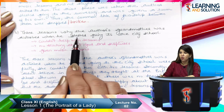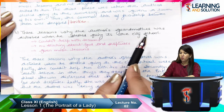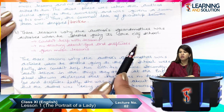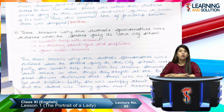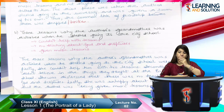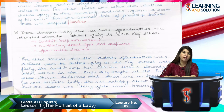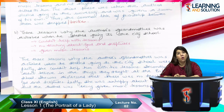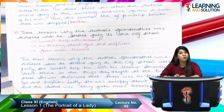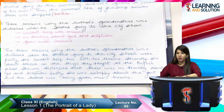The next question: mention three reasons why the author's grandmother was disturbed when he started going to the city school. When he started going to the city school, the grandmother felt upset because she couldn't help him with the lessons, she was upset because there was no teaching about God and scriptures — no mythology was taught — and she was upset about the music lessons being given to the author at school.